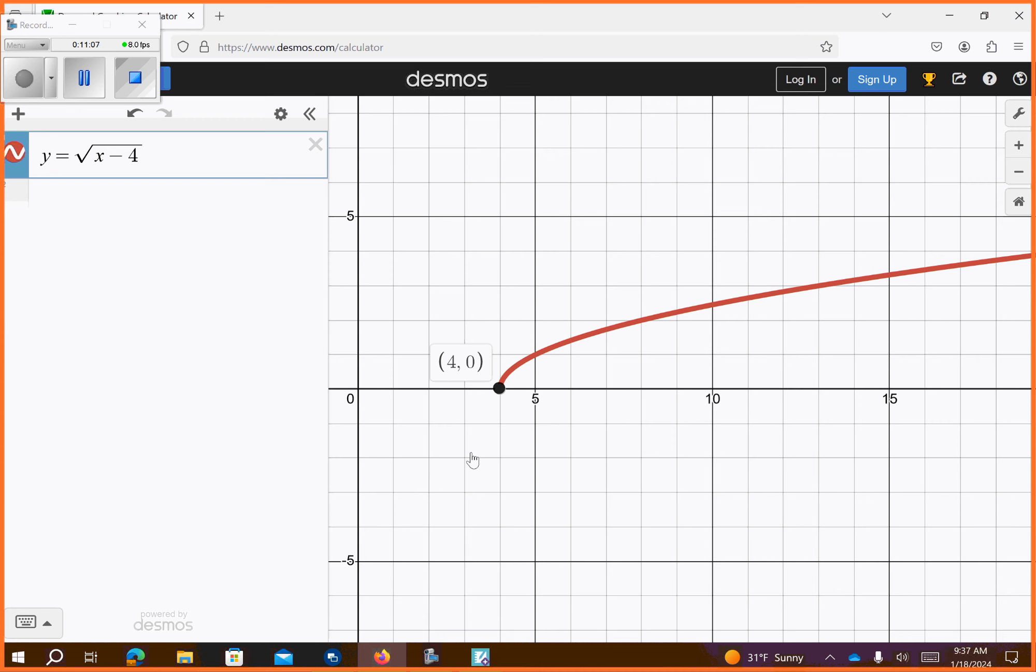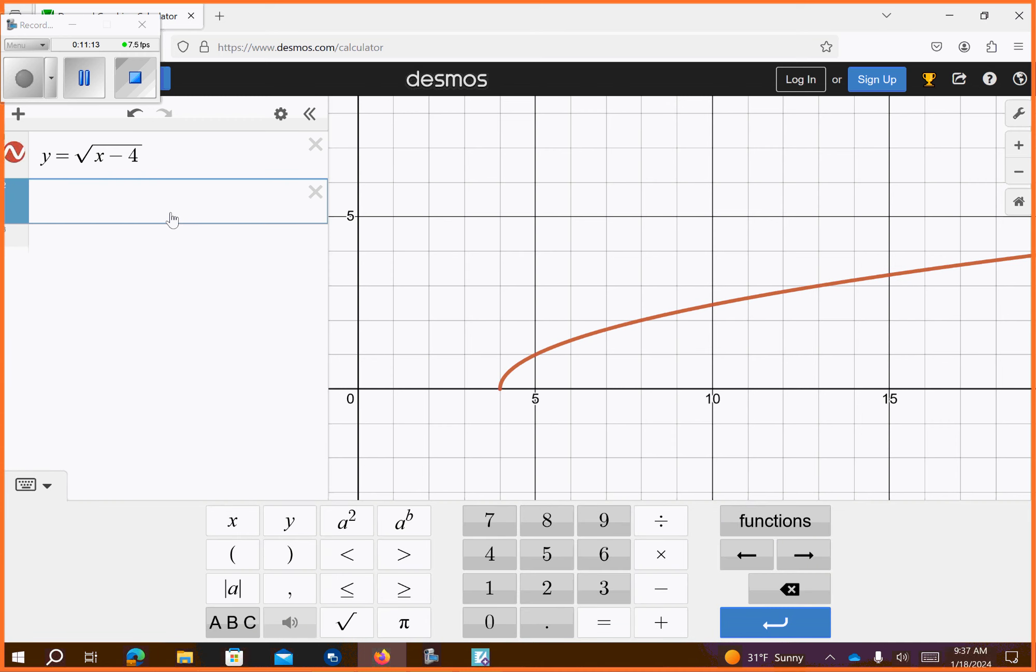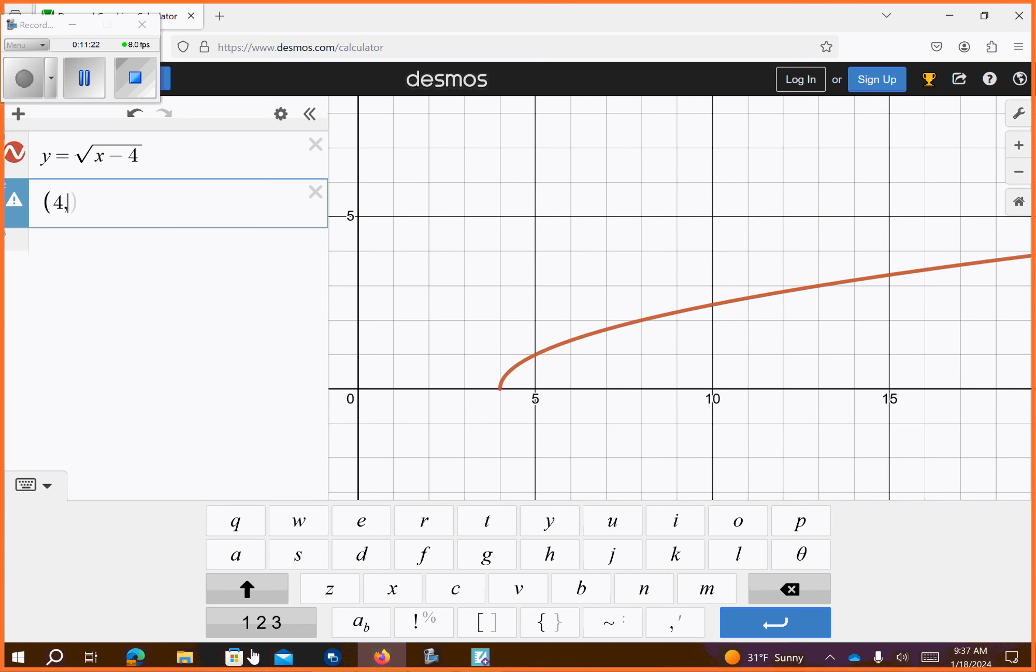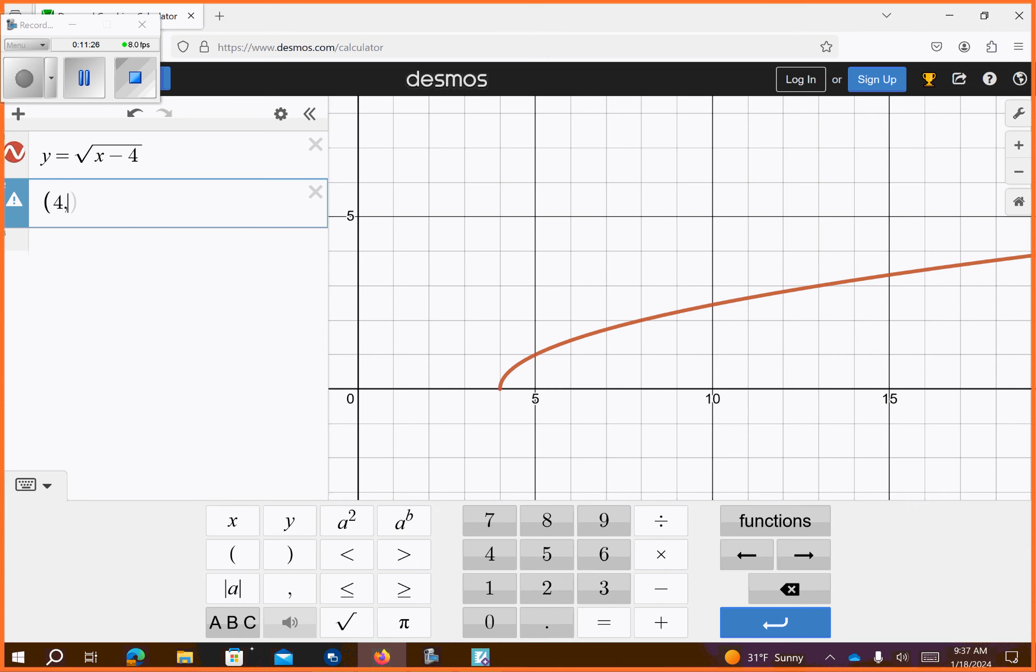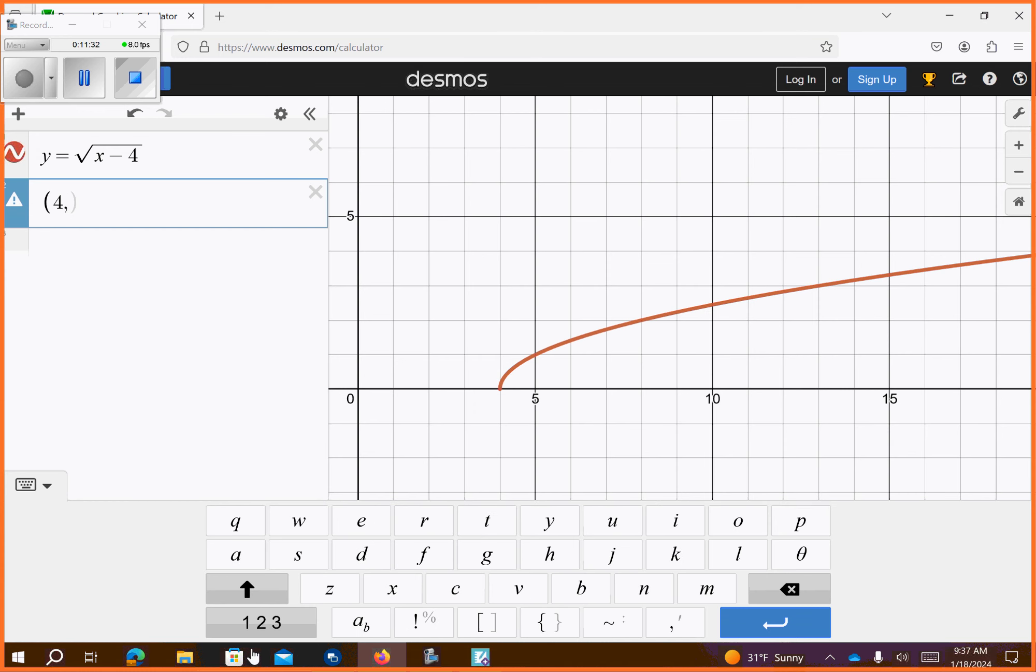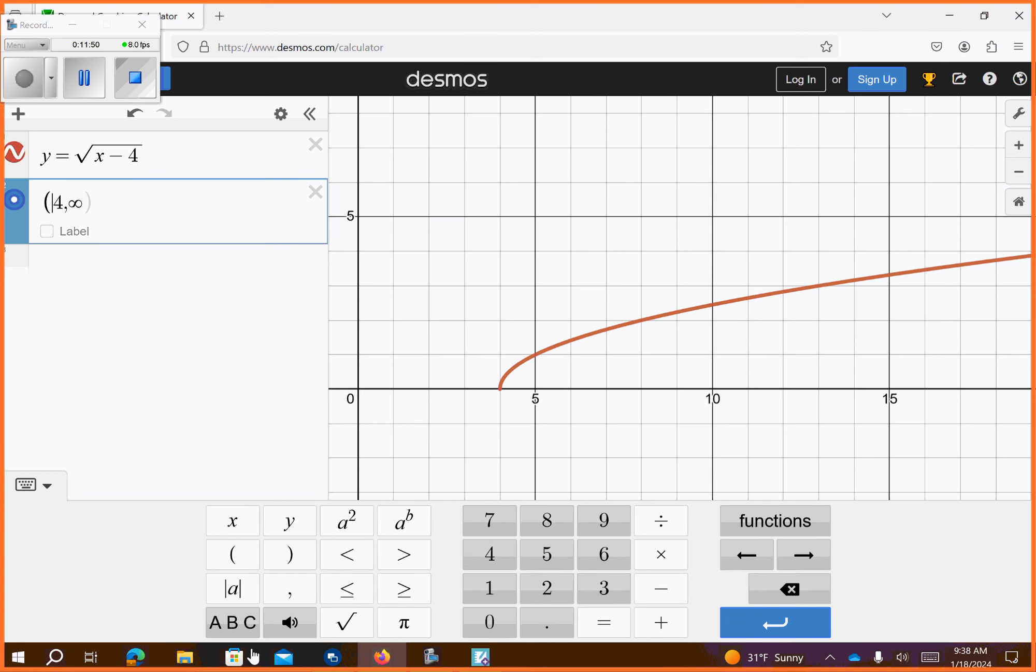So, my domain on this problem goes from, now this, this will be what the domain is. I think we can do this. Goes from 4, comma, and now I have to find it. It goes to infinity. Where is my infinity at? I can't see infinity, so I'm going to just spell it out. I-N-F-I-N-I-T-Y. There it goes. So, oops, and I made a mistake. What kind of bracket should this first one be?